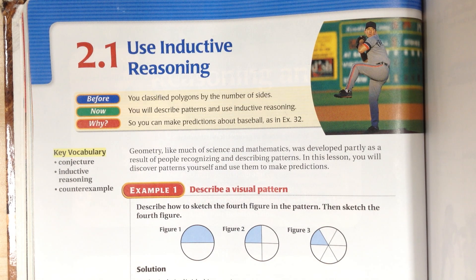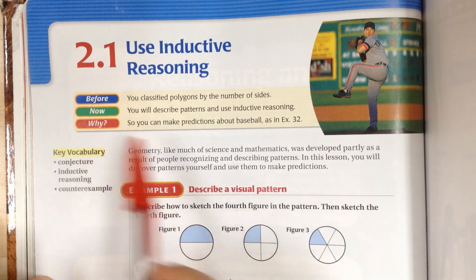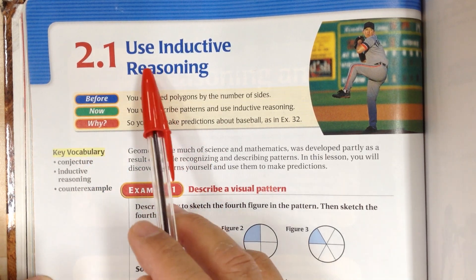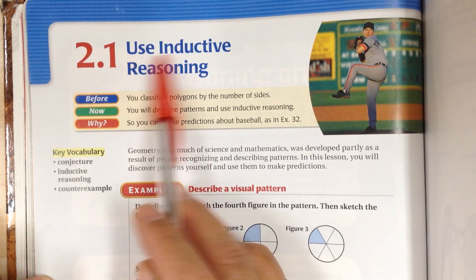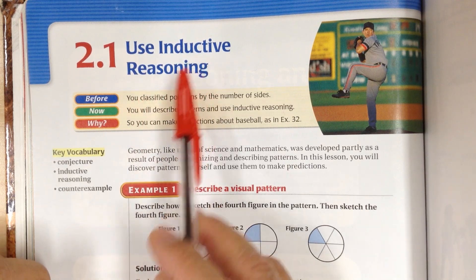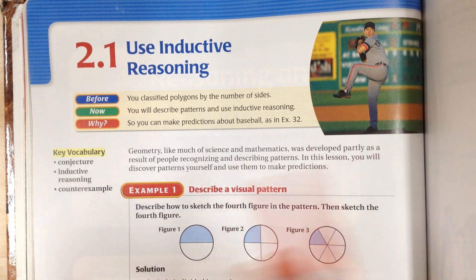Let's go to page 72. This is lesson 2.1, and the objective of this lesson is to use inductive reasoning. Inductive reasoning basically means you look for a pattern and try to figure out the next step.